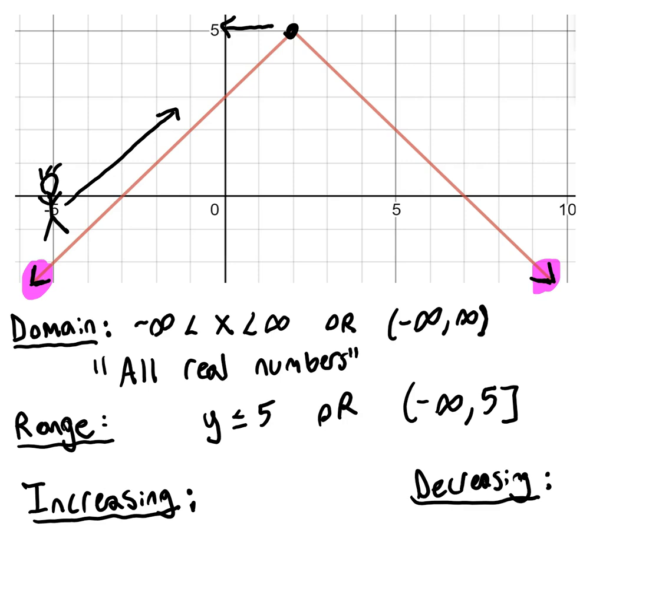This first section of graph, this whole part, is going to be increasing. So the x values for that part are from negative infinity all the way over to the left side of the graph to 2.